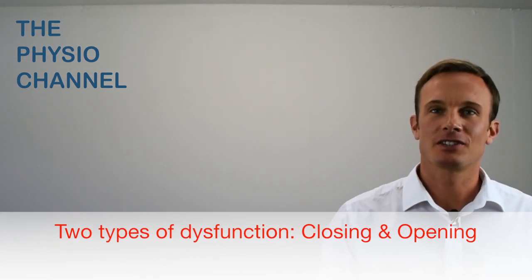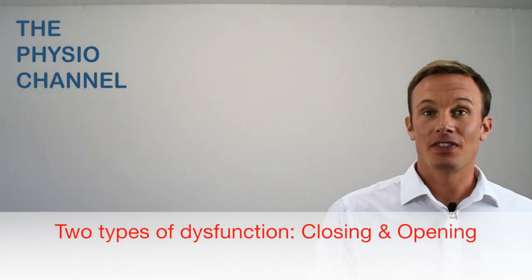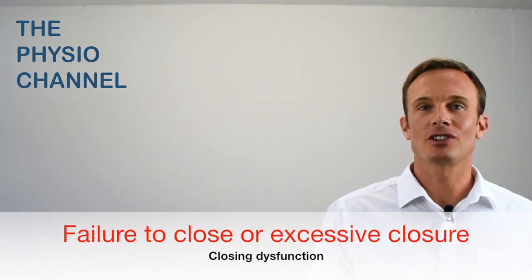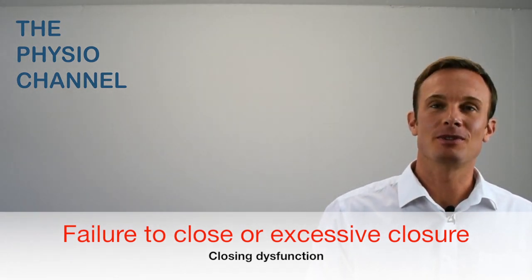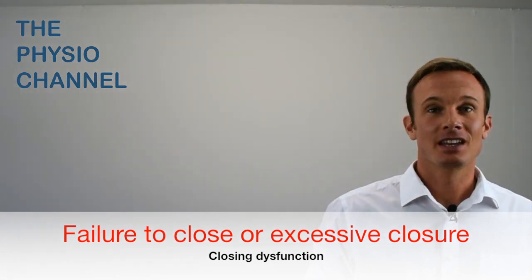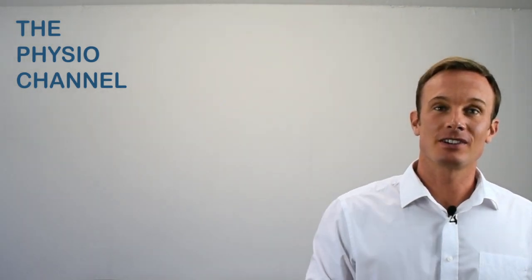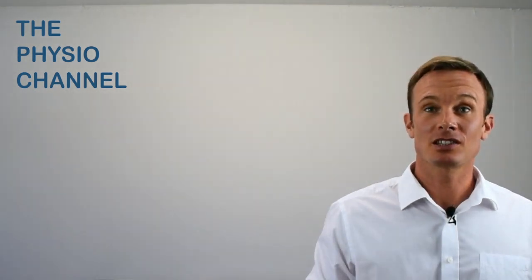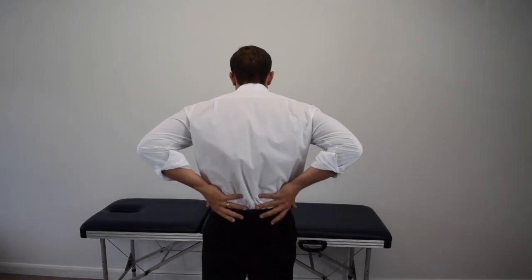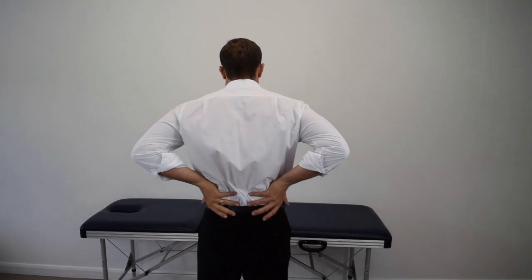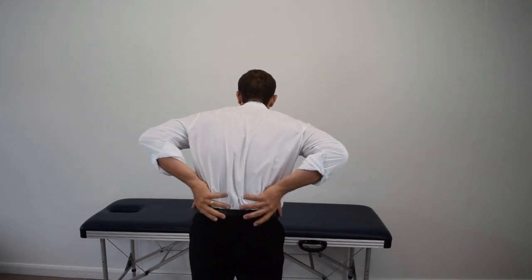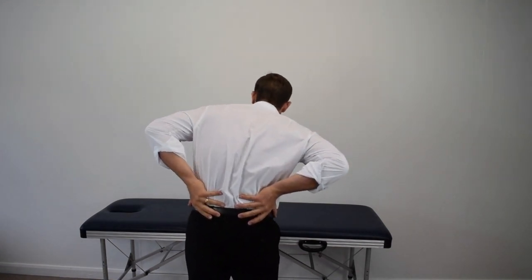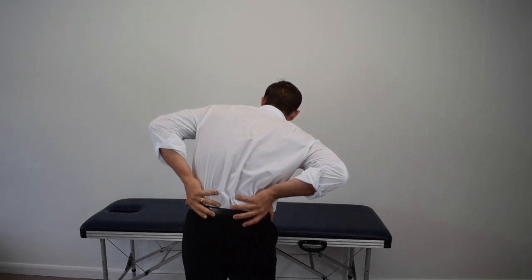Let's start with closing dysfunctions. These occur when soft tissue or joints fail to close around a nerve, or in some cases close too much. Just think of a patient with sciatic nerve irritation from a disc protrusion — they'll be bent forwards to avoid closing the nerve foramen further and to try to create space around the nerve which has been diminished by the disc protrusion.